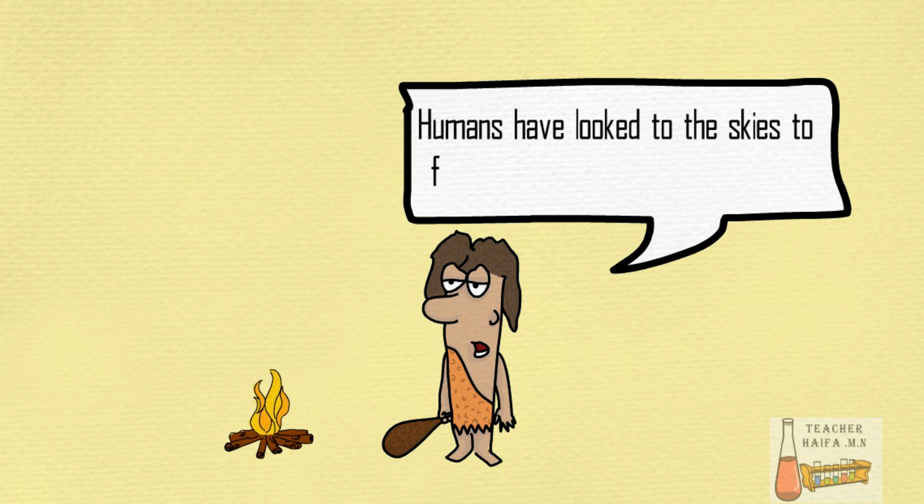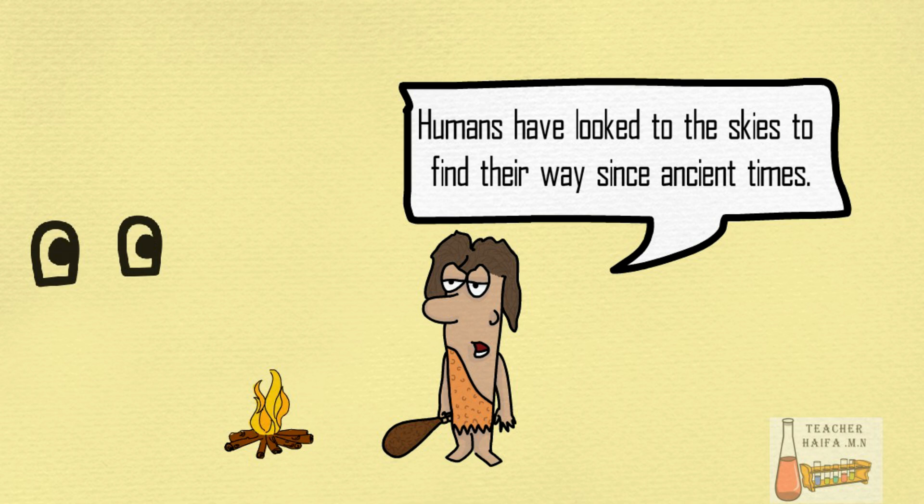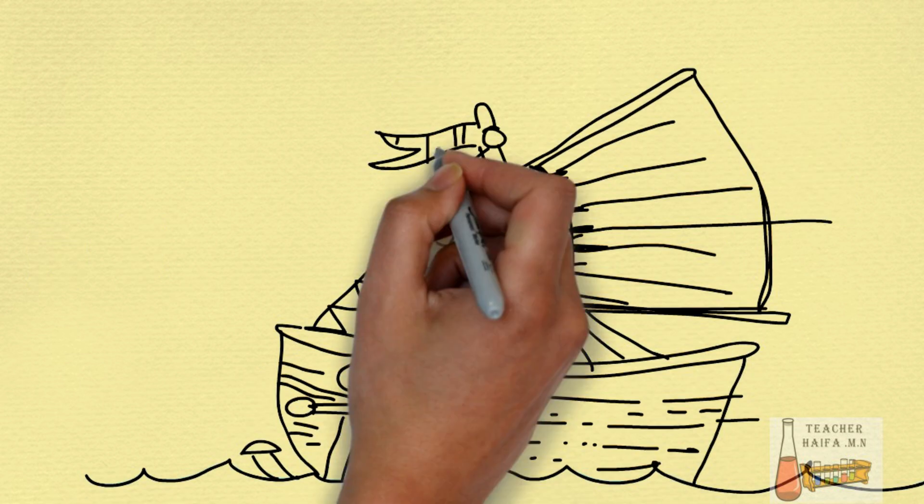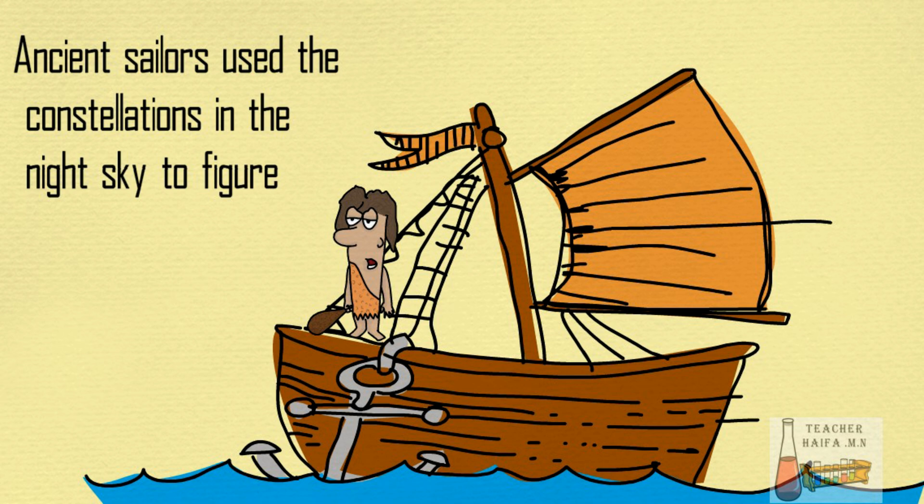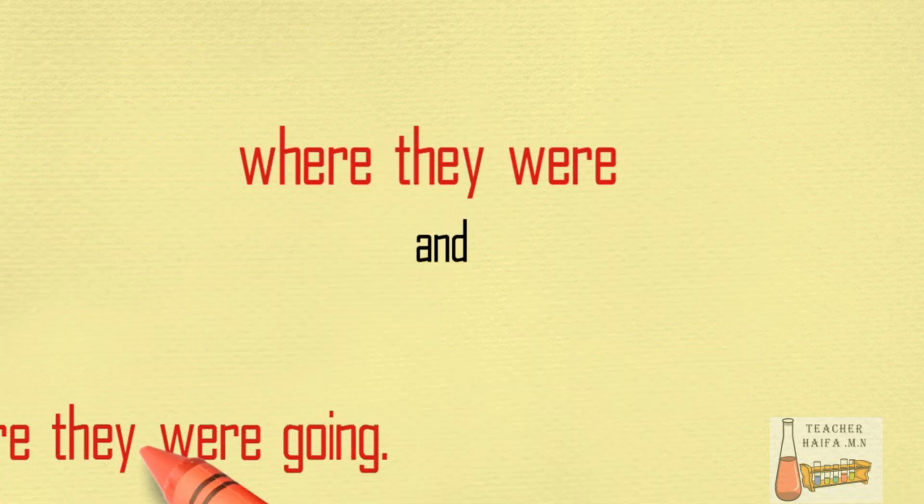Humans have looked to the skies to find their way since ancient times. Ancient sailors used the constellations in the night sky to figure out where they were and where they were going.